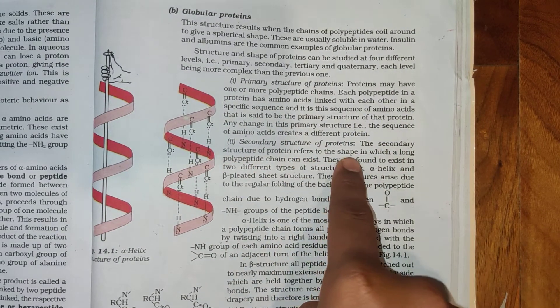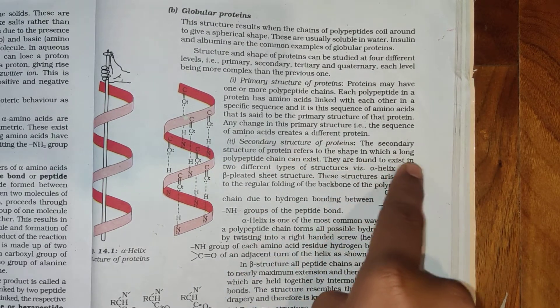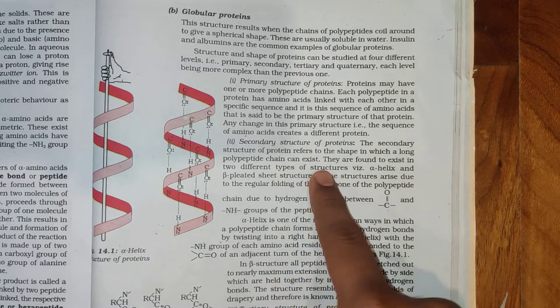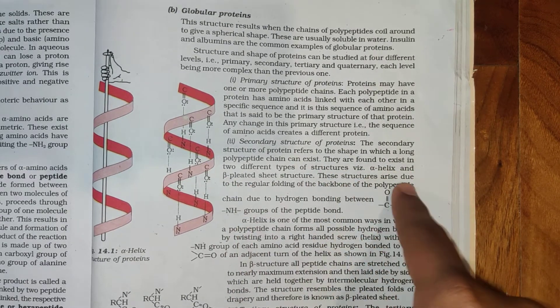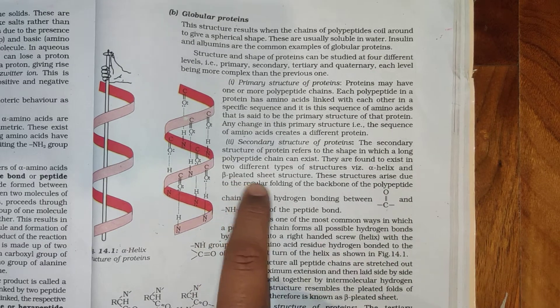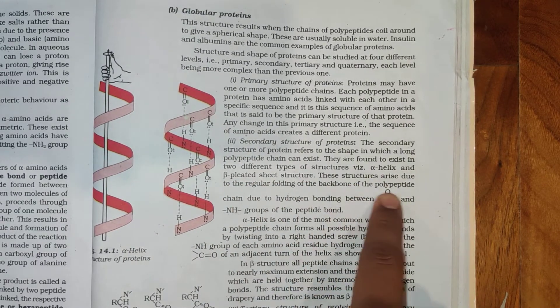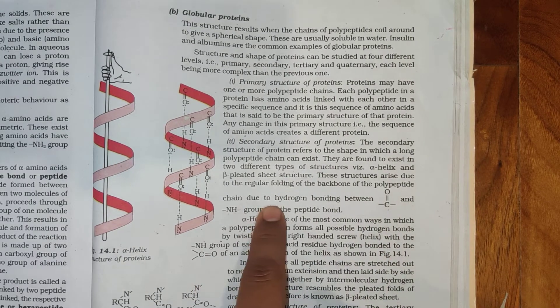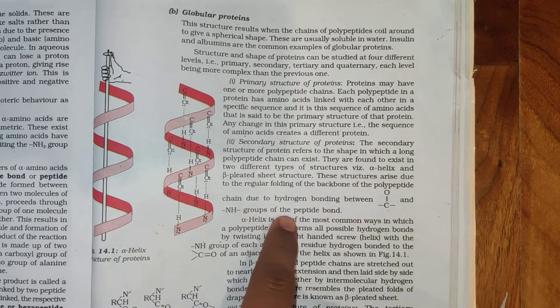Secondary Structure of Proteins: The secondary structure of protein refers to the shape in which a long polypeptide chain can exist. They are found to exist in two different types of structures with alpha helix and beta pleated sheet structure. These structures arise due to the regular folding of the backbone of the polypeptide chain due to hydrogen bonding between C double bond O and NH groups of the peptide bond.